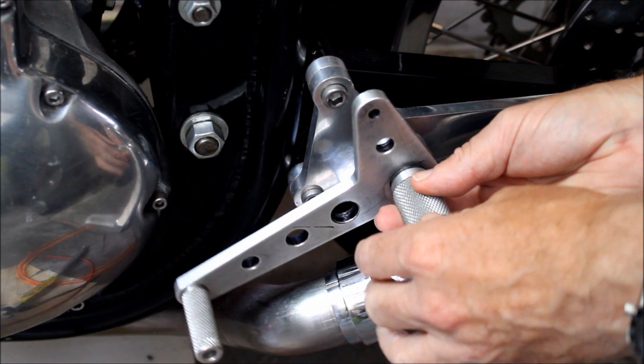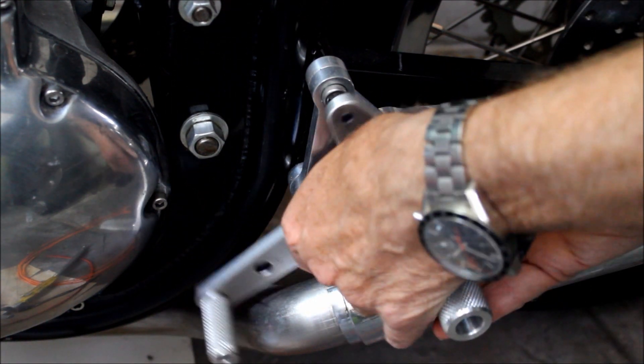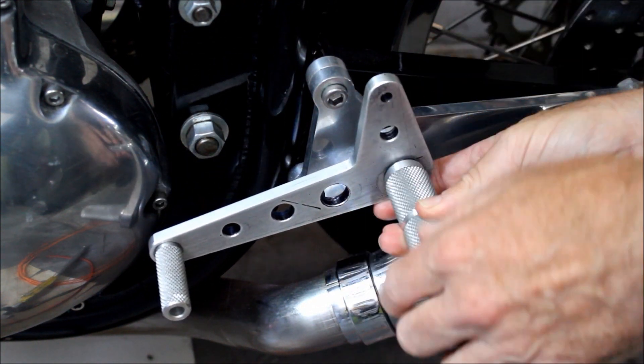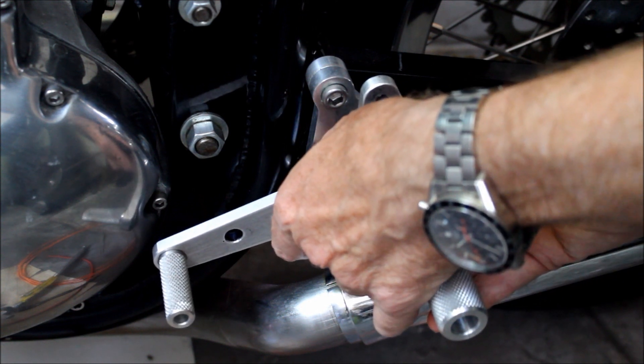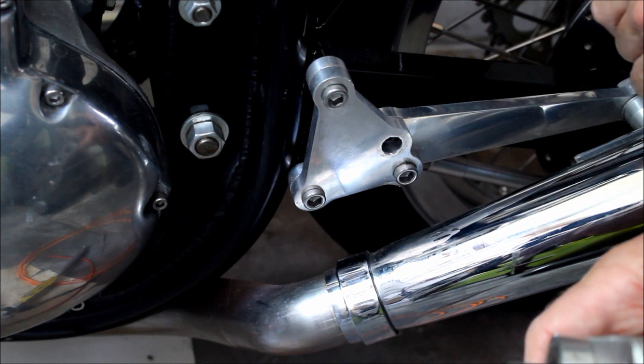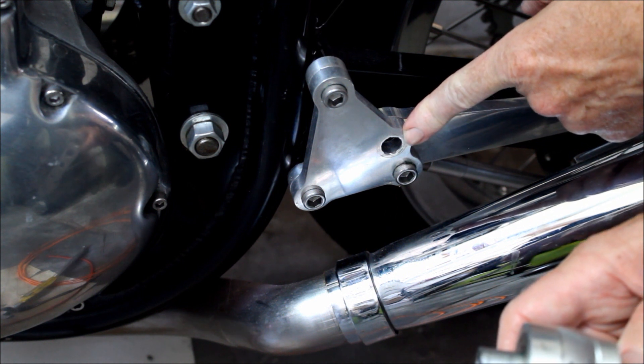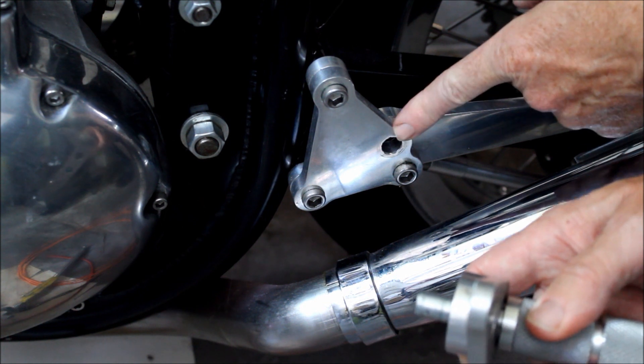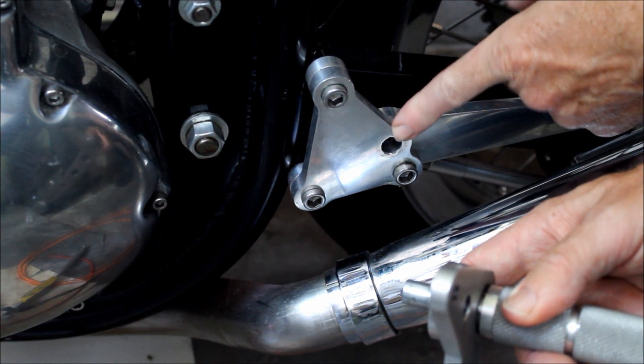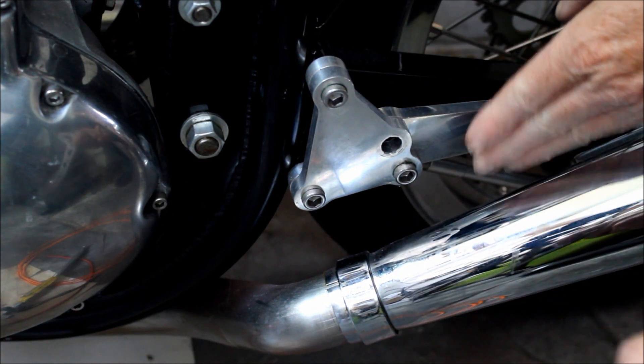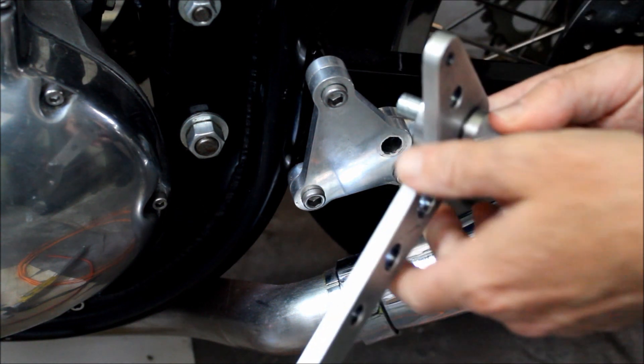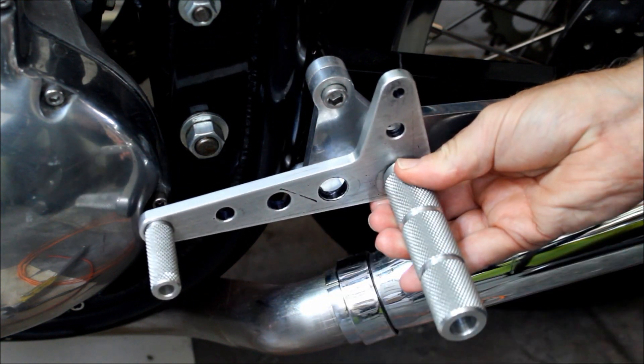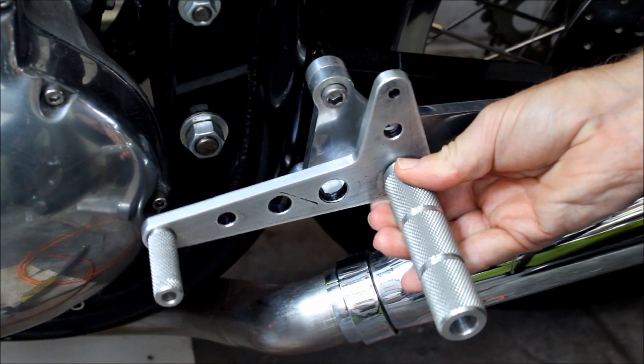I've got a slight problem - this peg won't go in all the way. The reason is I'd forgotten that when we made these brackets, this hole has a step in it that was put there for the old levers. That step's no longer required and is now a problem, so these will have to come off and that hole needs to be drilled all the way through.